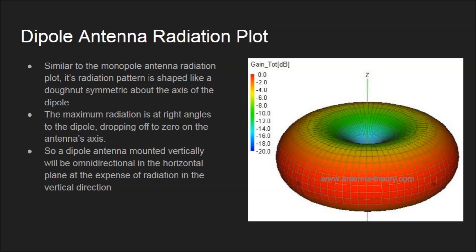The dipole antenna radiation plot is similar to the monopole. Its radiation pattern is shaped like a donut, symmetric about the axis of the dipole. The maximum radiation is at right angles to the dipole, dropping off to zero on the antenna's axis. A dipole antenna mounted vertically will be omnidirectional in the horizontal plane, at the expense of radiation in the vertical direction.